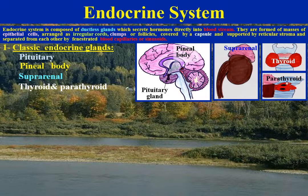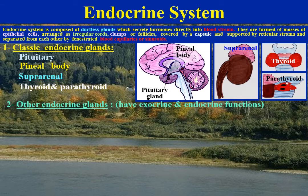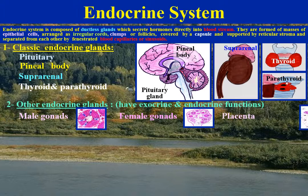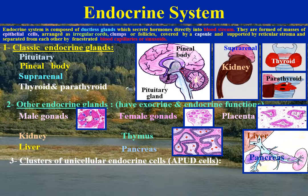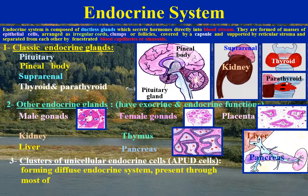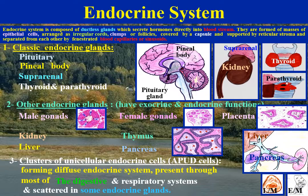Other endocrine glands have both exocrine and endocrine functions, such as male gonads, female gonads, placenta, kidney, thymus, liver and pancreas. There are also clusters of unicellular endocrine cells, APUD cells, forming the diffuse endocrine system present throughout most of the digestive and respiratory systems and scattered in some endocrine glands.